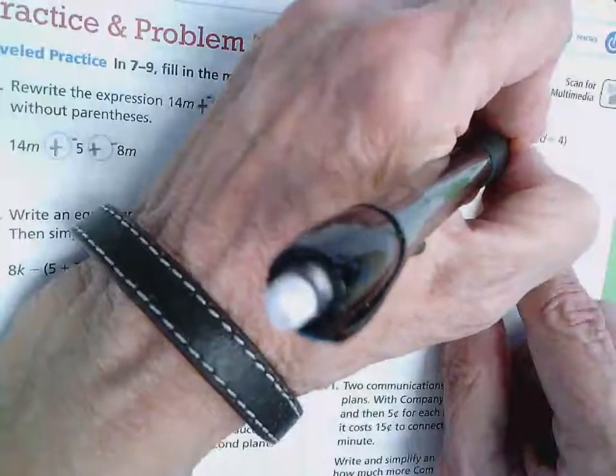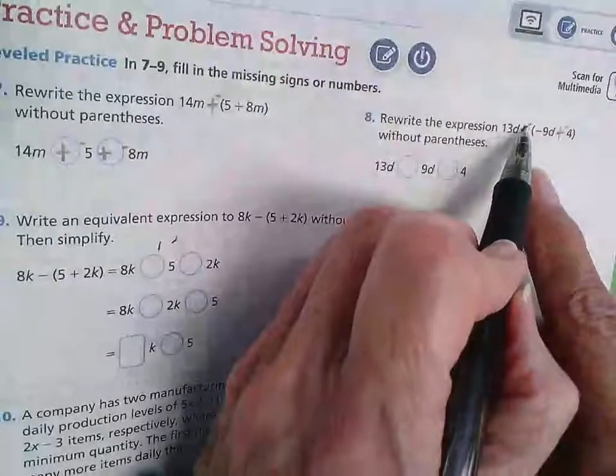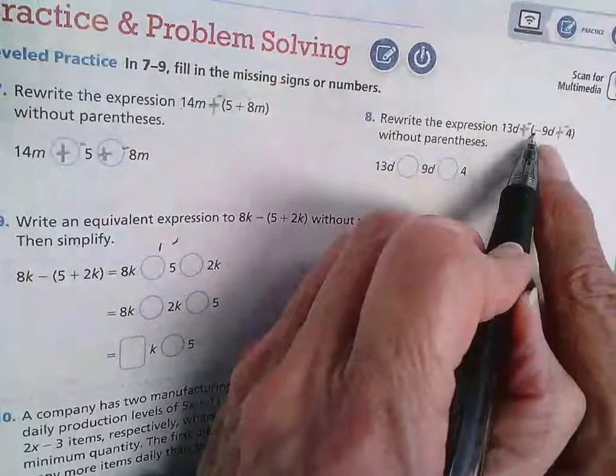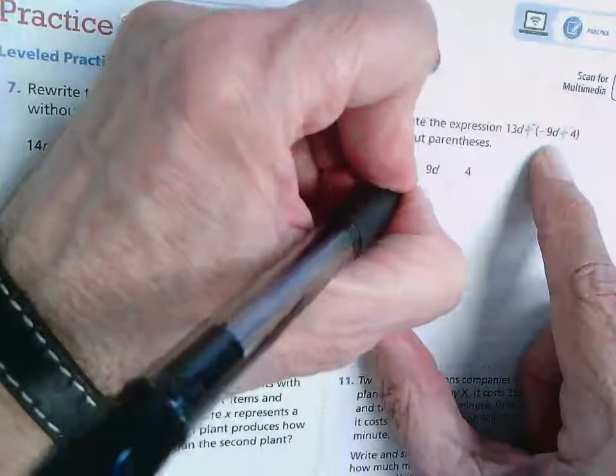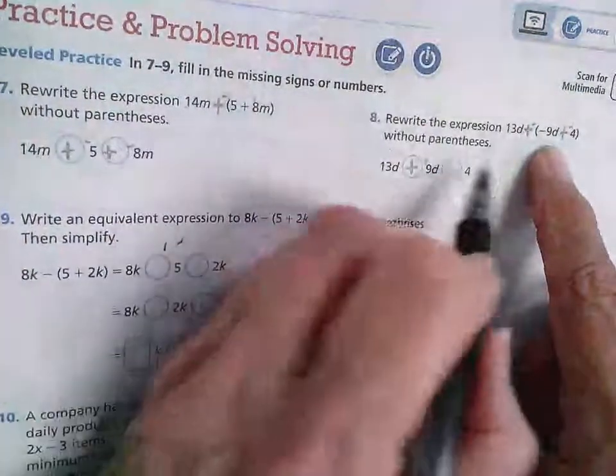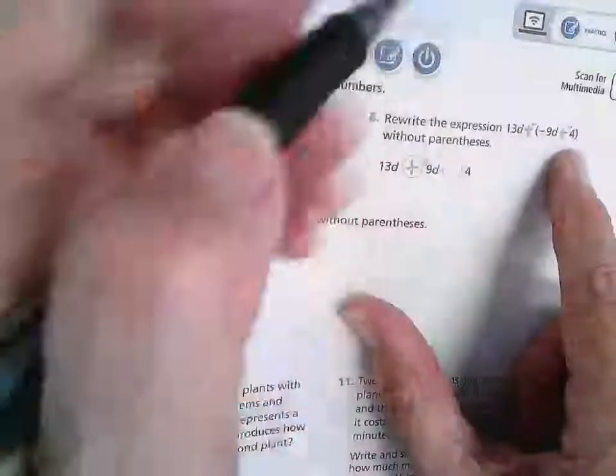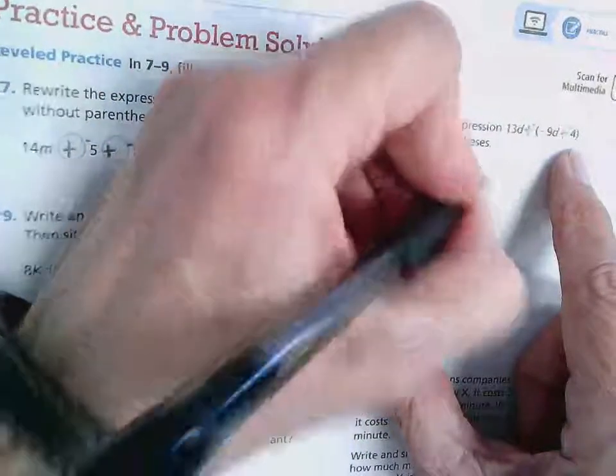And if you want, again, you can put the plus and negative. Negative times a negative is a positive. So that's going to be a positive 9d. And here, a negative times a negative is a positive. So that's going to be plus a positive 4.